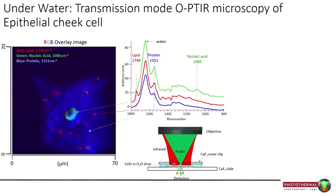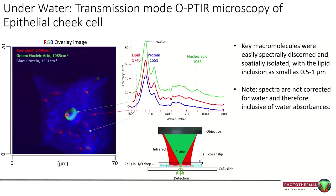Cells in water are actually relatively easy with this technique. This is a cheek cell in water placed onto a calcium fluoride slide with a calcium fluoride cover slip on top. When I collected single-point spectra from around the cell, I saw lipid features, nucleic acid features, and of course ubiquitous protein. When I collect a single-frequency image on those three wavelengths and combine them in an RGB overlay, it actually looks like a stunning almost fluorescent-like image where you can see very small lipid droplets and nucleic acid concentrated in the center — some features are around half a micron in size.